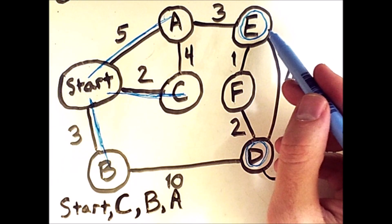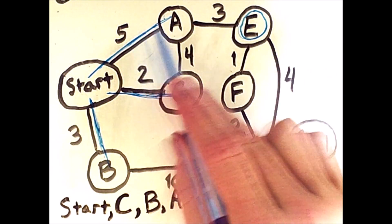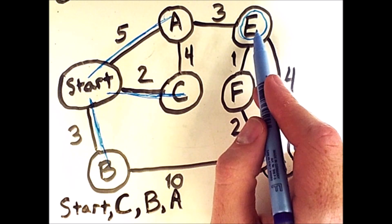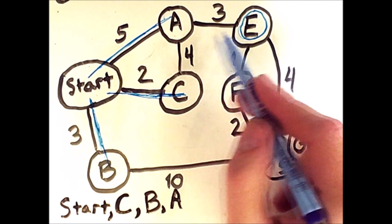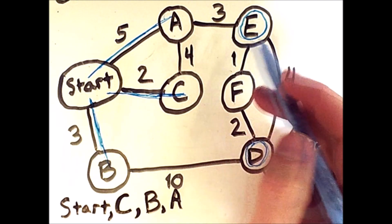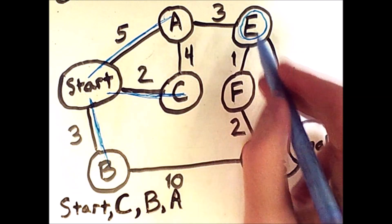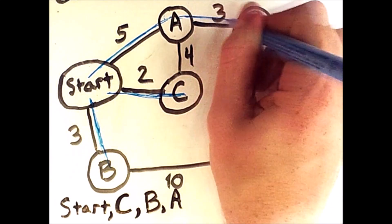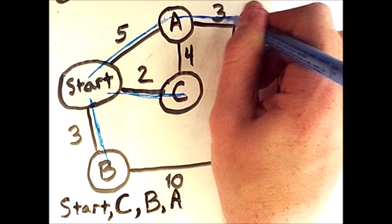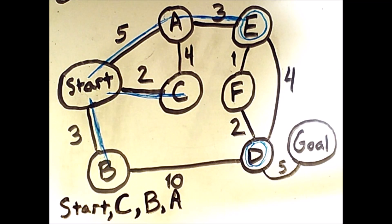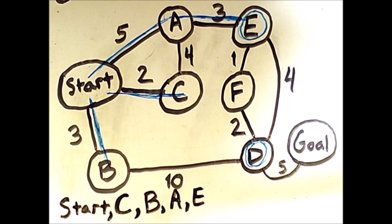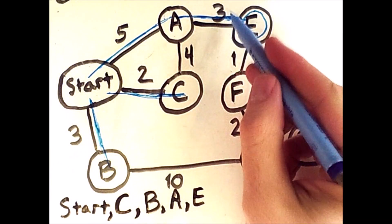The cost to reach E would be 5 plus 3, because the reason that we added E to the fringe was because we were imagining visiting it from A. So 8 is less than 13, therefore the next thing we'll do is visit E from A. That adds E to our list of visited states, and the cost to reach E was 5, 6, 7, 8.